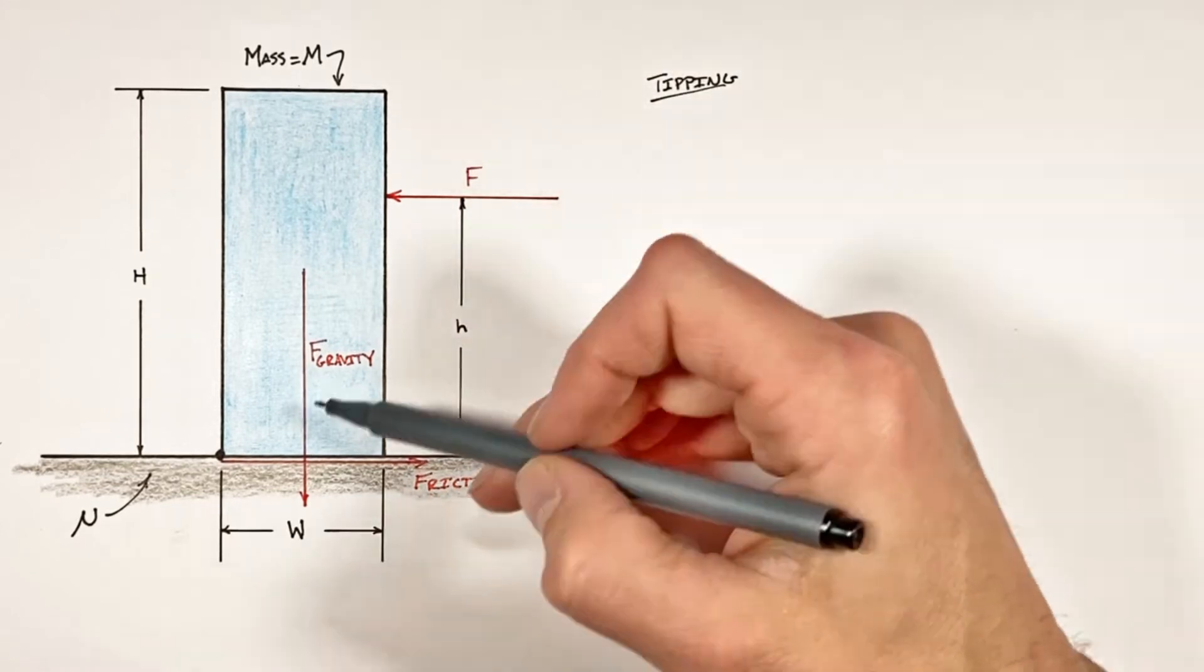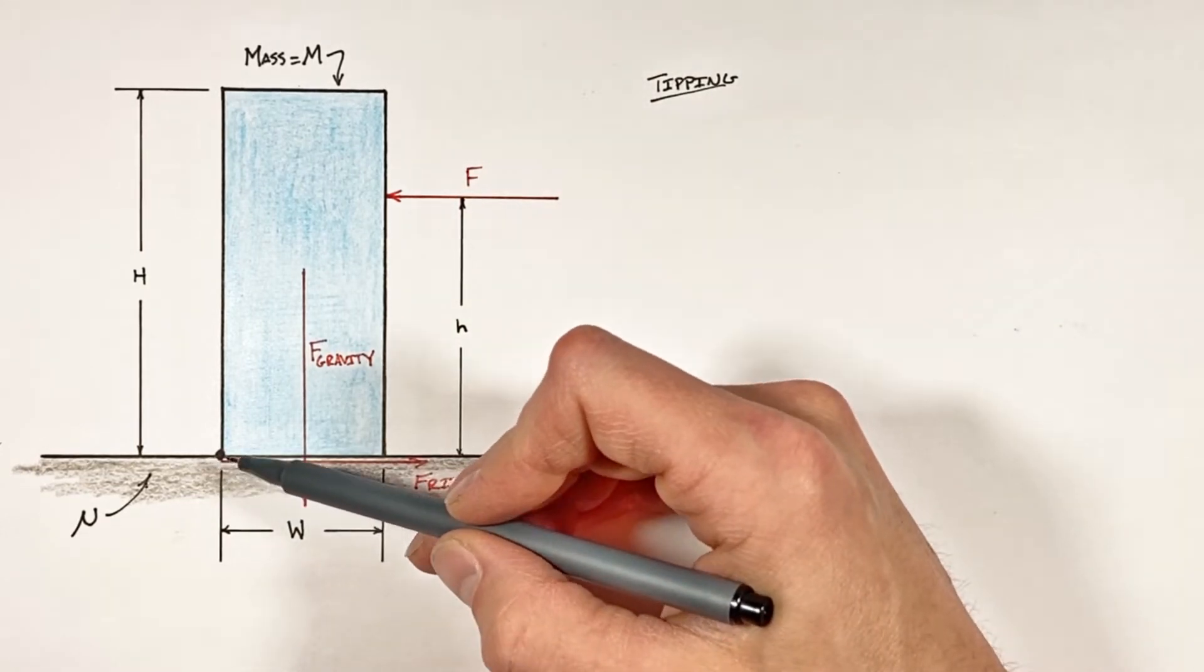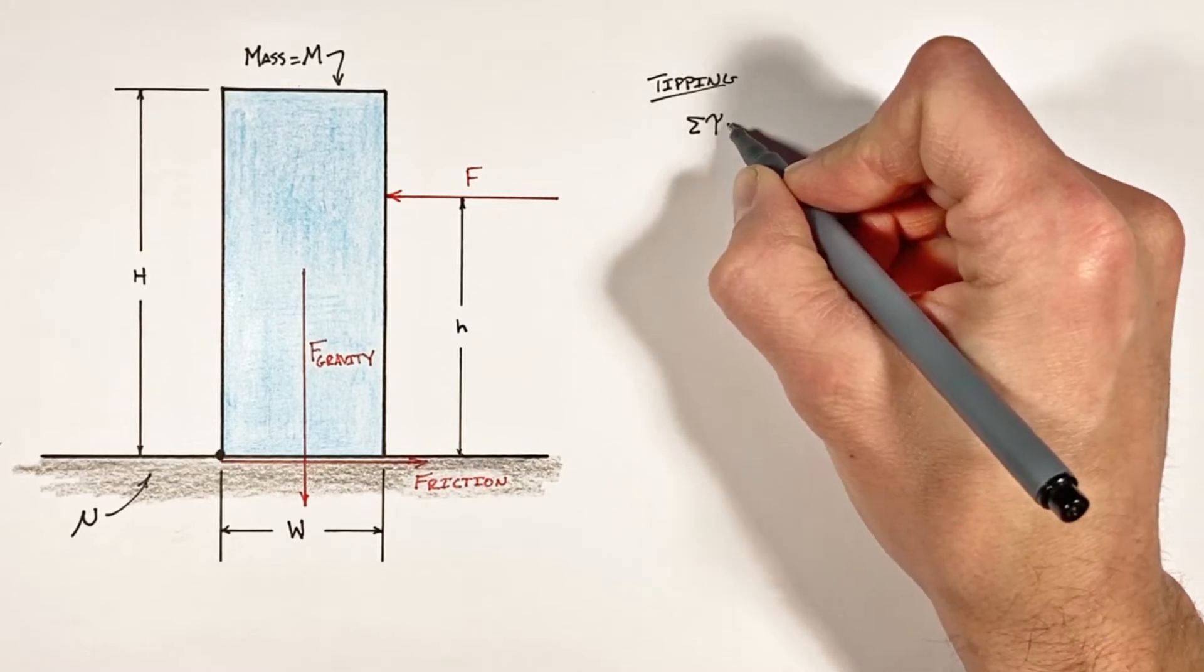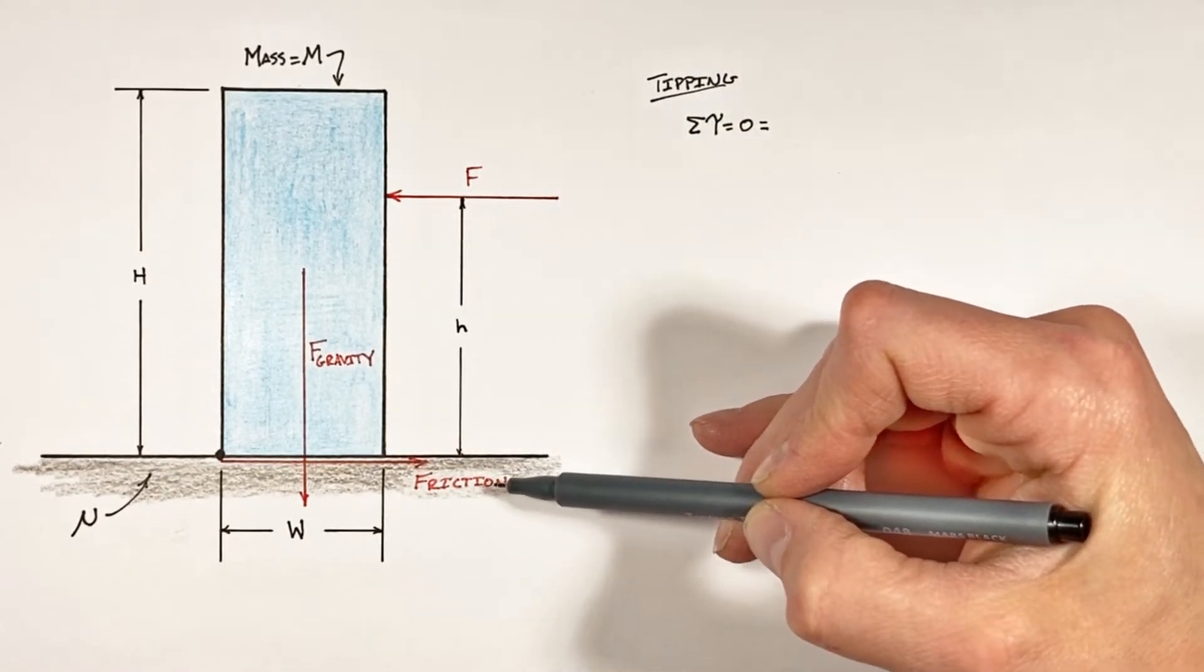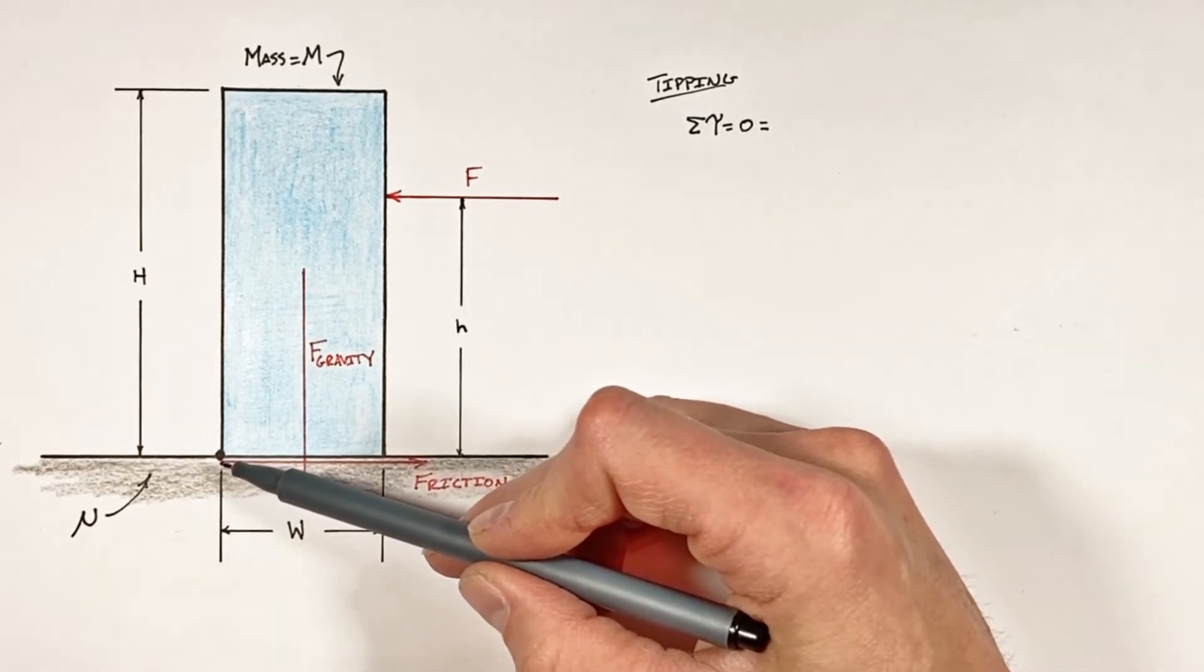Now the block has three different forces acting against it producing torque around this point.